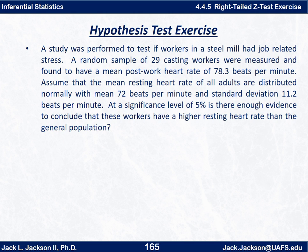A study was performed to test if workers in a steel mill had job-related stress. A random sample of 29 casting workers were measured and found to have a mean post-work resting heart rate of 78.3 beats per minute. Assume that the resting heart rate of all adults is distributed normally with mean 72 beats per minute and standard deviation 11.2 beats per minute. At a significance level of 5%, is there enough evidence to conclude that these workers have a higher resting heart rate than the general population?